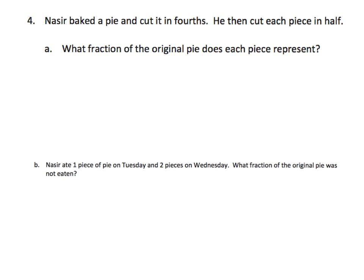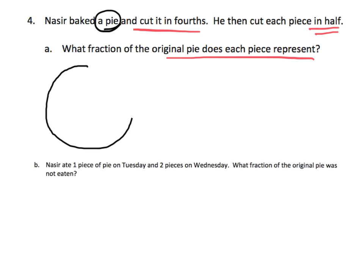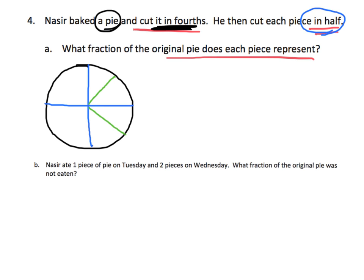Nasir baked a pie and cut it into fourths. He then cut each piece in half. What fraction of the original pie does each piece represent? Let's draw a circle for the pie. We cut it into fourths — one, two — giving four pieces. Then he cuts each piece in half: cut in half, cut in half, cut in half, cut in half. The question is: what fraction of the original pie does each of these new pieces represent?